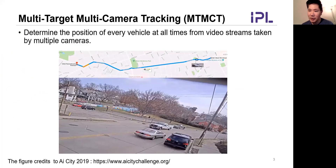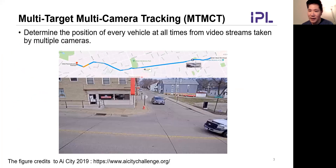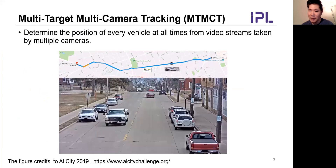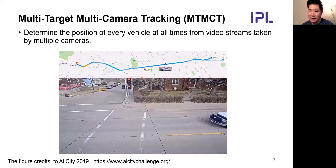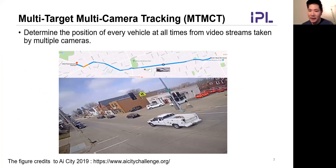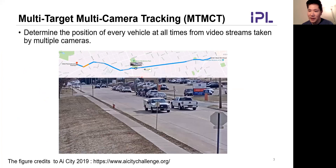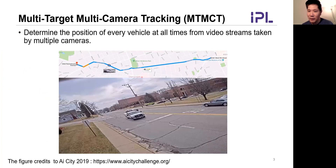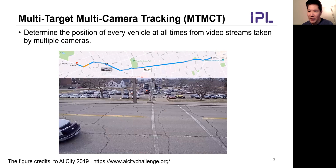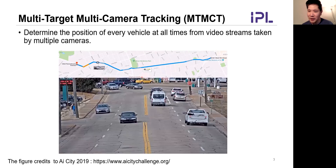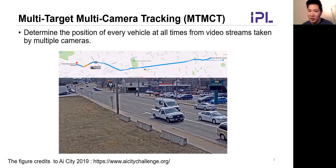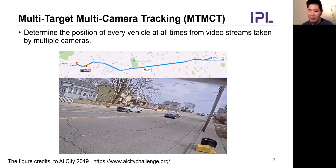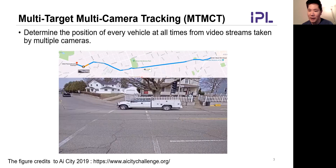Due to the exponential growth of surveillance networks, multi-camera vehicle tracking is becoming one of the most important tasks. Here is an example of MTMCT from the CityFlow dataset. The definition of multi-target multi-camera tracking is to determine the position of every vehicle at all times from video streams taken by multiple cameras.